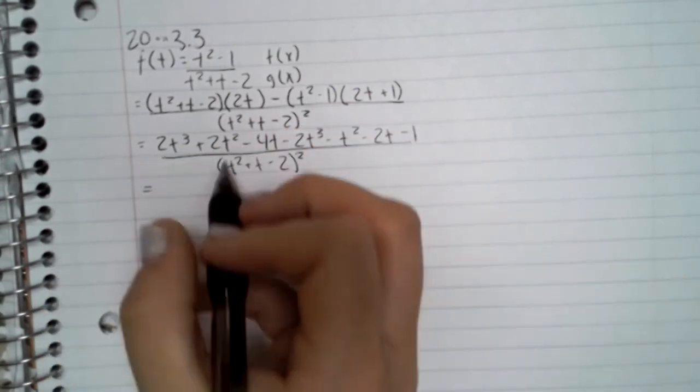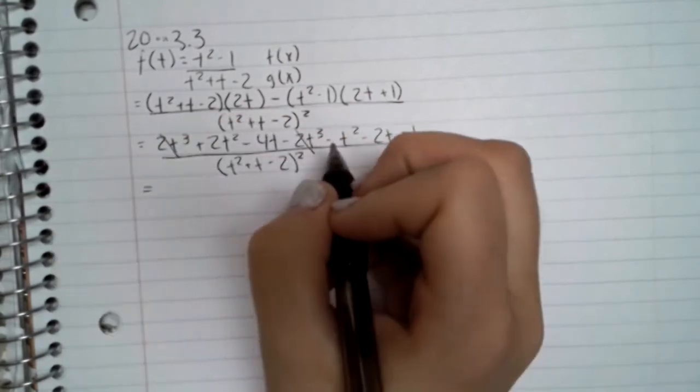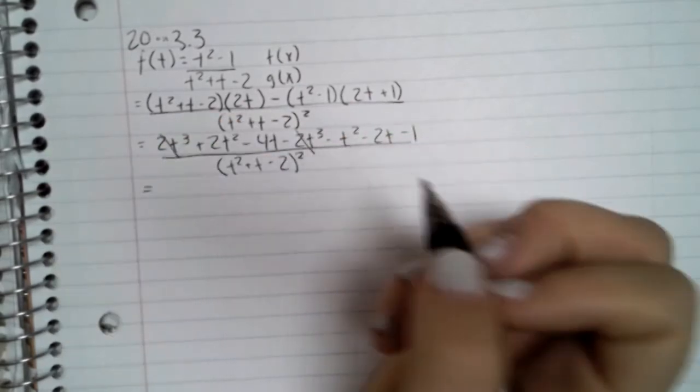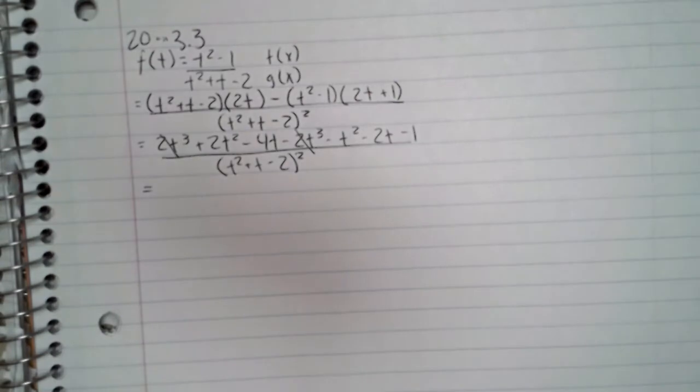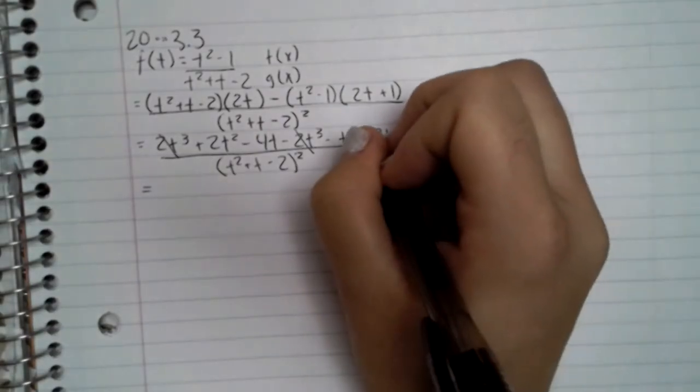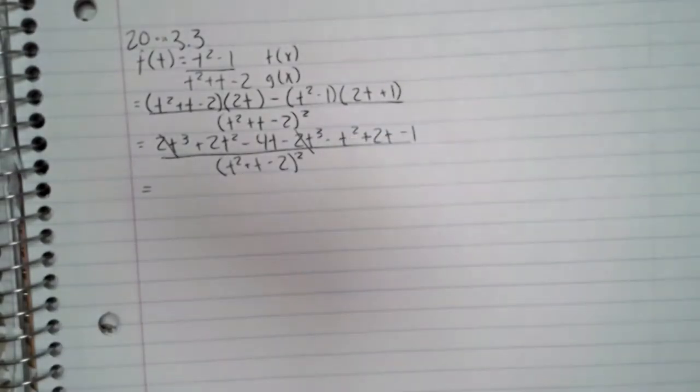So then these cancel out. I believe negative 1 times 2t is negative 2t, but we're subtracting that. Oh, so close. Okay.